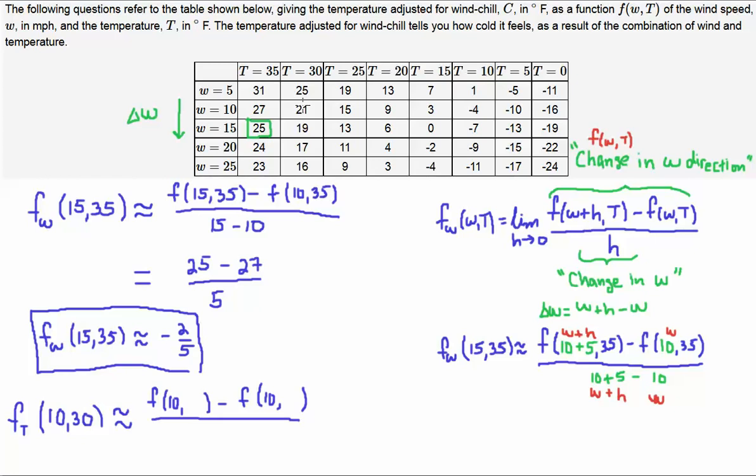So, that means I'm going to hold this 10 row constant. That's why I left the tens here. So, it's going to be f of 10 comma, let's see, minus f of 10 comma, let's wait and see. So, I want it at 30. That means I want this guy here.